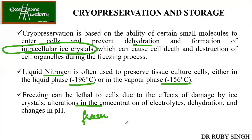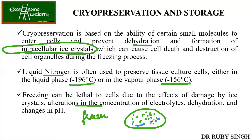When you have cells in the cytoplasm, so much water is present. If by chance that water starts forming ice crystals, they will start joining and everything will get frozen. And if everything gets frozen, the cell will die. This is true for all bacterial or eukaryotic cells.